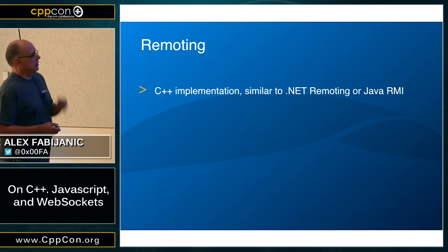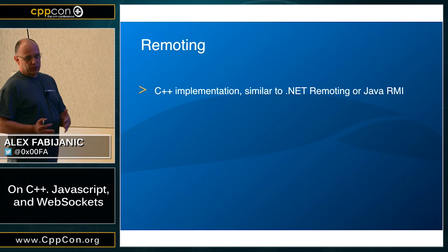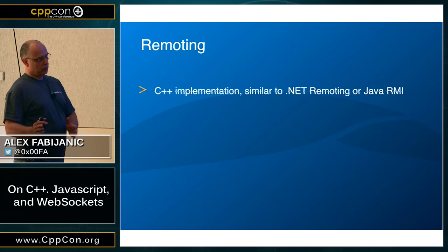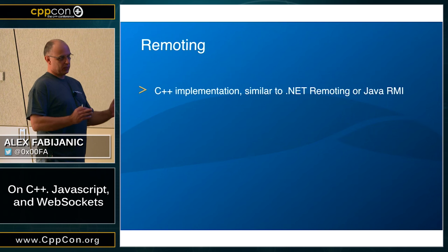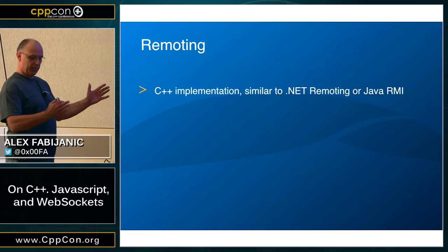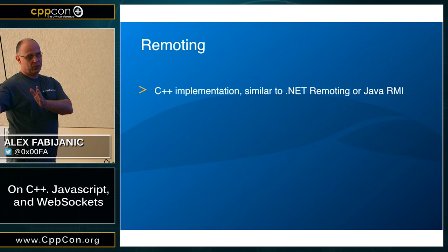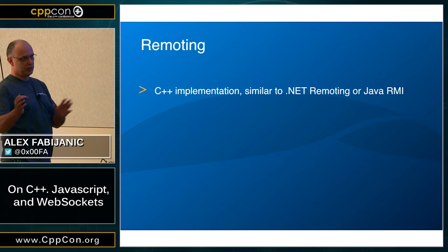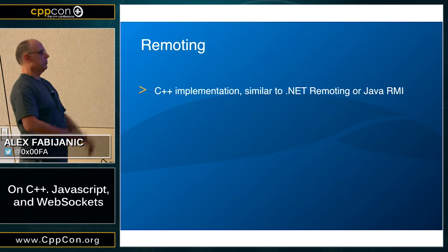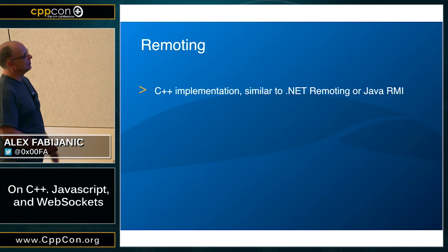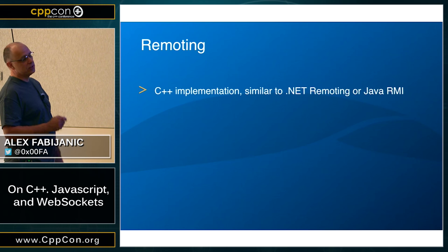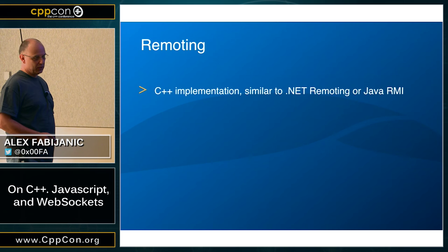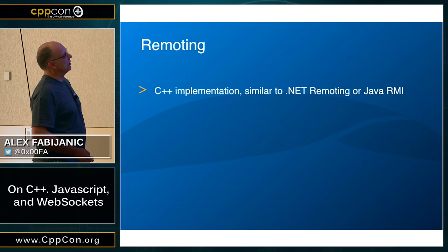So, remoting is a library that is separate from POCO. Currently it exists in the Machina.io, which is another open source project built on POCO, and we do plan to take that remoting out as a separate library. It's a C++ implementation of remoting, similar to what we have in .NET or Java Remote Method Invocation.